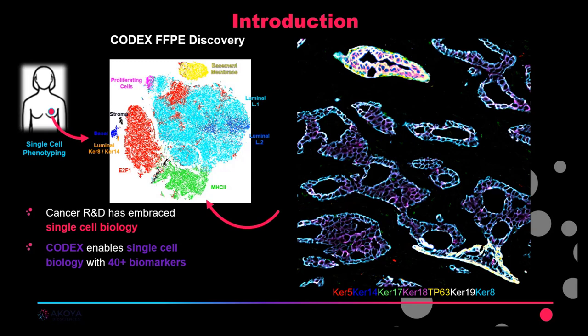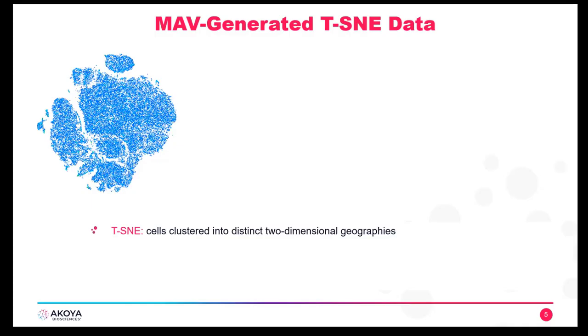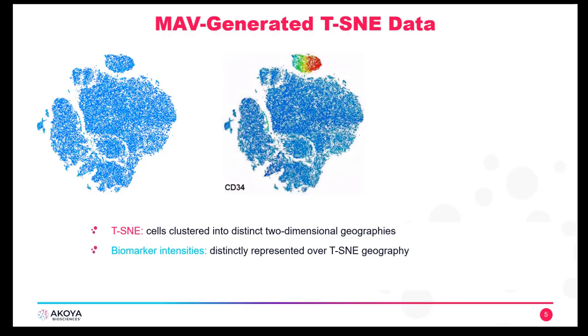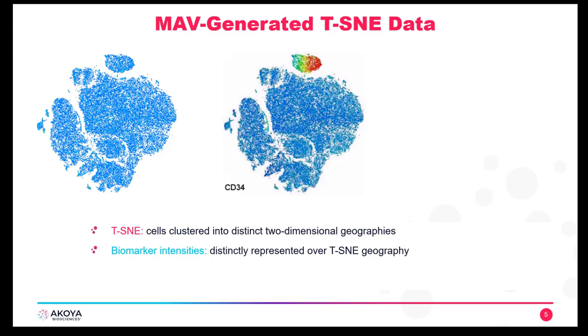We're going to see how to use TSNE plots to identify populations within the tissue, and how we can use both TSNE plots and clustering to conduct a high-parameter analysis. TSNE plots allow us to see biomarker expression in a graphical format where cells are organized in 2D space according to their similarity.